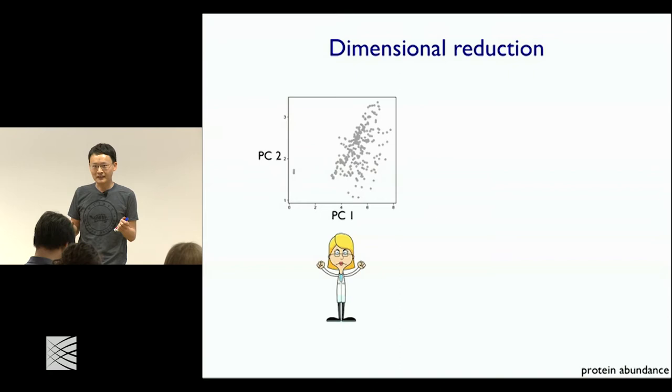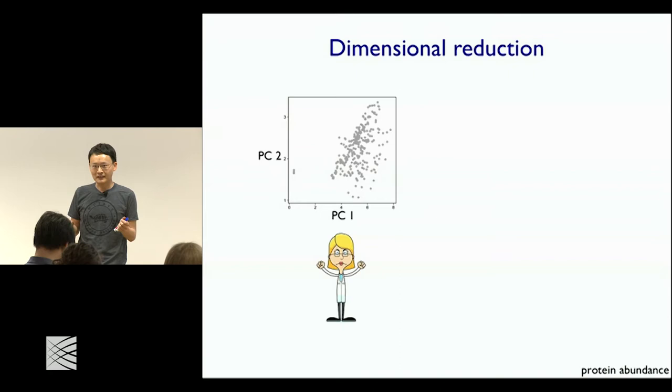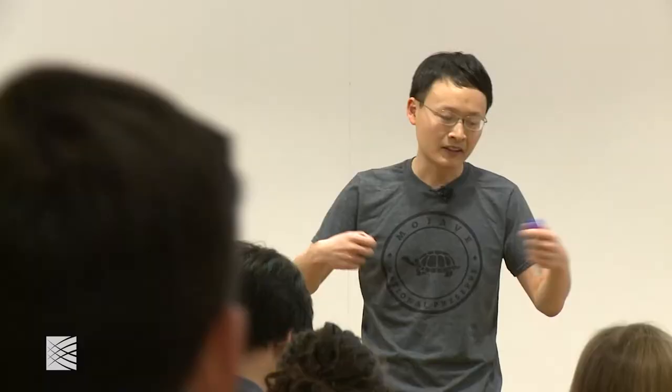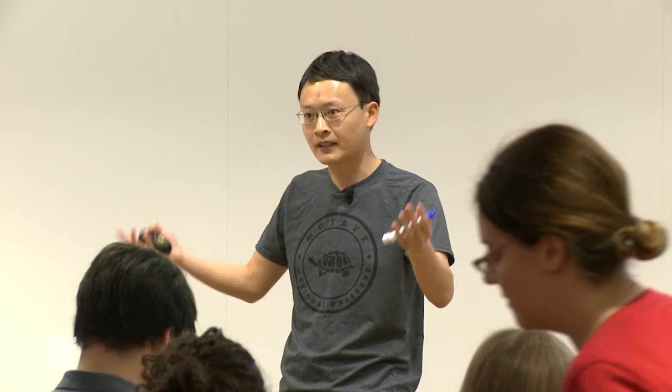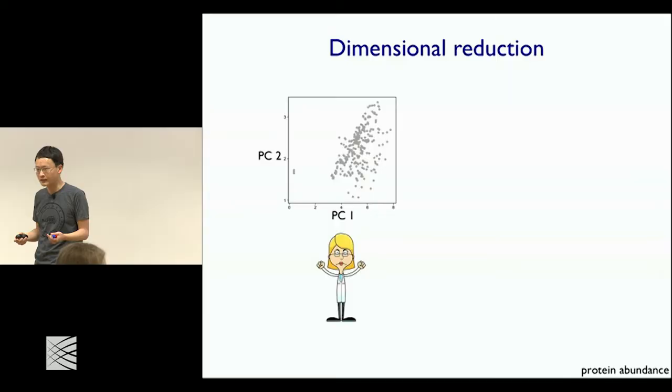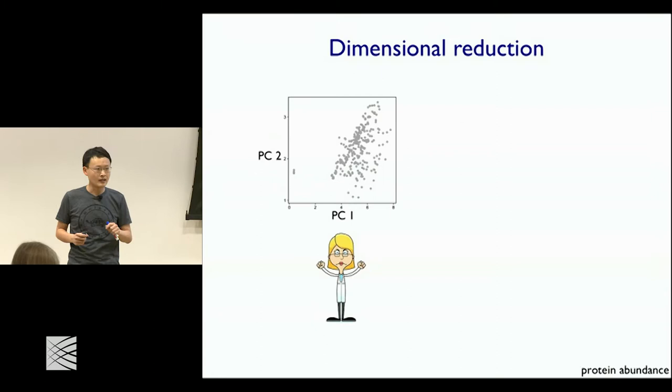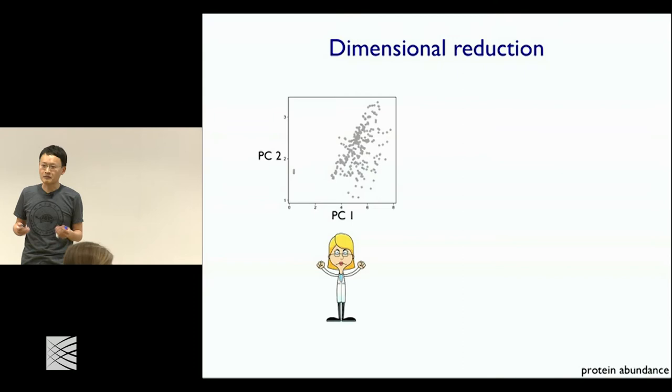I'll talk about some very recent work on the idea of how to do contrastive dimensional reduction — contrastive PCA — and hopefully that'll be useful in your analysis. To set up the motivation: if you're given a dataset, the first or second thing you do is some sort of visualization, like a PCA plot or t-SNE or one of these many dimensional reduction techniques. If you're an analyst expecting structure in your data, you're hoping the PCA will show you a few different clusters or interesting patterns.